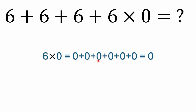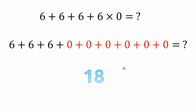Six times zero is the same as zero plus zero plus zero plus zero plus zero plus zero. It doesn't matter how many zeros you add — they all add up to zero. Six times zero is the same as saying: go ahead and add up six zeros and tell me what that adds up to. That's what multiplication is. And because you can replace the multiplication with equivalent addition, six plus six plus six plus those six zeros still gives you 18. Whether you write it one way or the other, the only correct answer is 18.